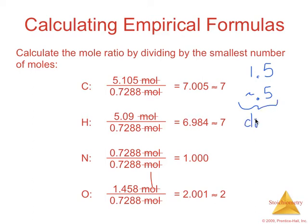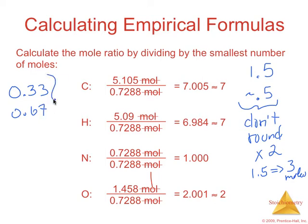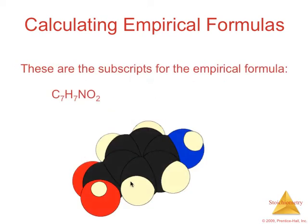you cannot round this. You have to multiply everything by 2 so that your 1.5 would go to 3 moles of whatever element it is. But you have to multiply everything that you've calculated to get these to be whole numbers. Similarly, if you end up with something 0.33 or something 0.67, you're going to multiply those by 3 to make them a whole number. 0.25 multiplied by 4. So the empirical formula for that example would be C7H7NO2.